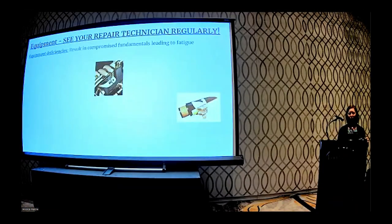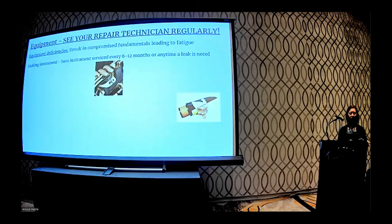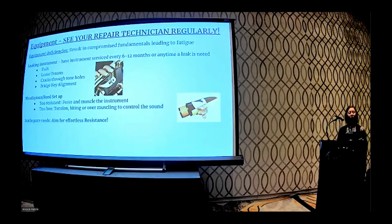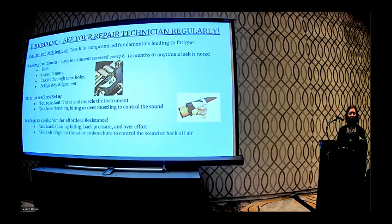Equipment. See your repair technician regularly. Compromised fundamentals can be attributed to equipment deficiencies. The leaking instrument. I mean, every 6 to 12 months, depending on how much you play, have your instrument looked at. Really, really important. Pads. Just a small pinhole leak can cause this. Loose tenons, cracks through tone holes, bridge key alignment. Your mouthpiece and reed setup also. If it's a little resistant, you're going to force and push too hard. Again, that kind of throat tension. If it's too free, we might bite or overmuscle or tense our throat to center and get that beautiful tone that we want. We want to aim for an effortless resistance in our reeds. But too hard a reed, we're going to bite, have a little bit too much back pressure, and maybe over-effort versus too soft. We might be kind of like walking on eggshells. I hope I don't squeak. Kind of idea. So, we want to be sure we're not compromising what we do based on our equipment.